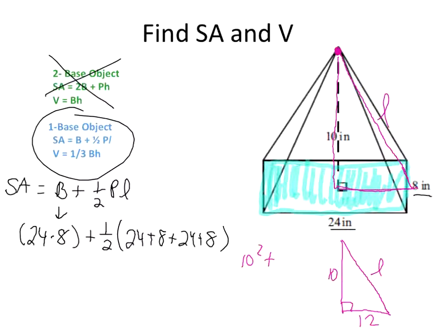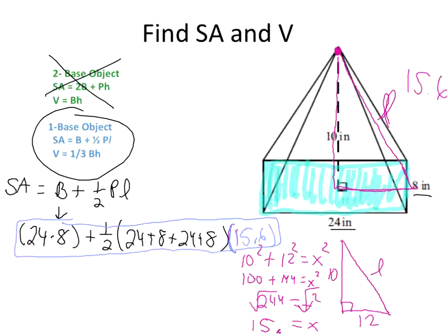So Pythagorean theorem. 10 squared plus 12 squared equals x squared. 100 plus 144 is x squared. 244 is x squared. Square root both sides. And we get the x would equal the decimal. So I'm just going to round. 15.6. So what's my slant height? What's my L? 15.6. So I'm going to fill that in. So here would be my formula. So once they work it out, 24 times 8, 192, plus 1 half. All of these added together gives me 64 times 15.6. By the time I work it all out, you end up with 691.2 inches squared.